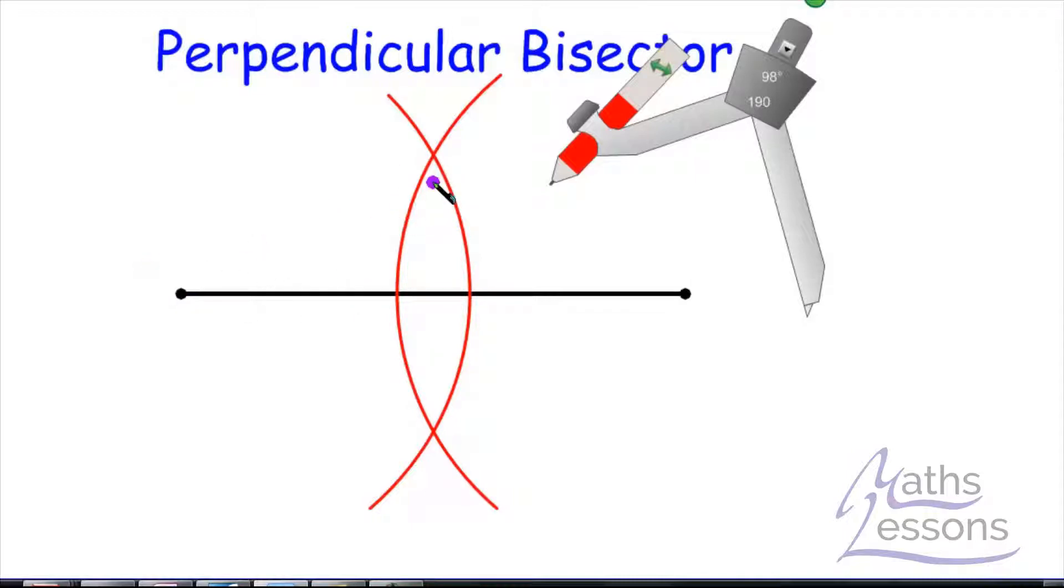So that point from there and that point from there is equal distance, and similarly here that is equal distance to that. Therefore if we connect these two points we're going to get all the equal distances. Bisector means to cut in half so we'll have equal distance. Perpendicular means at right angles.